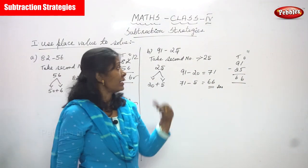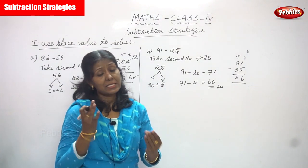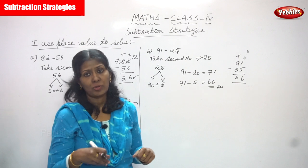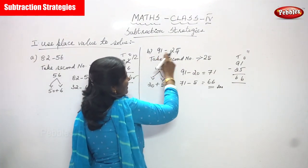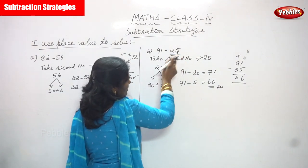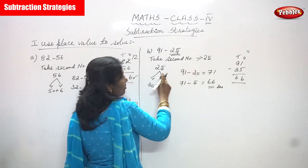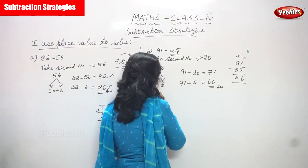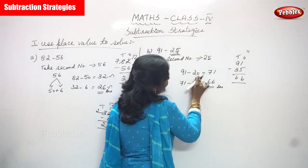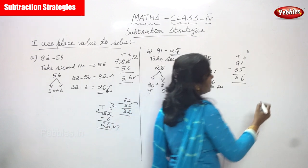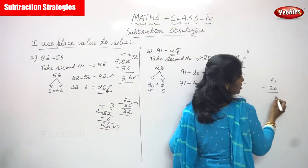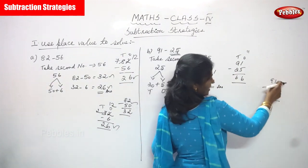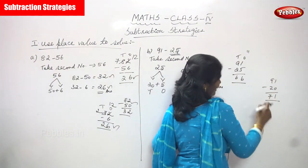Now we solve the second sum: 91 minus 25. We follow the subtraction strategy using place value method. Take the second number 25 and split it: 20 plus 5. Write the first number 91 and subtract the 10's: 91 minus 20. So 1 minus 0 gives 1, and 9 minus 2 gives 7. The answer is 71.